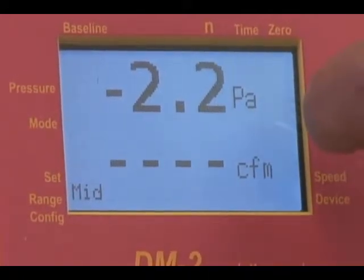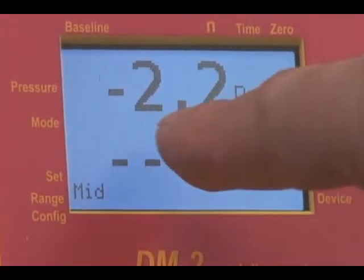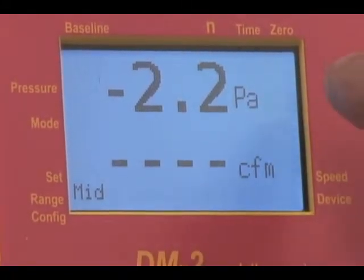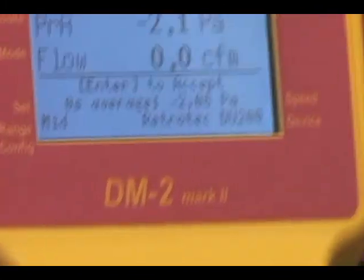This is an example here, where on a relatively cold day around freezing, I have a minus 2.2 Pascal bias pressure, and we're going to try and get rid of that using the baseline function. We press the baseline key,